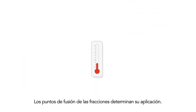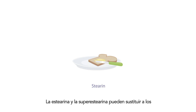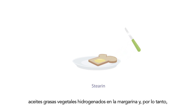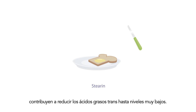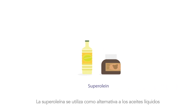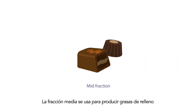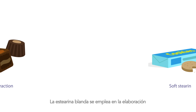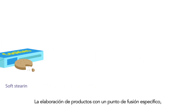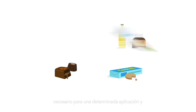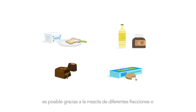The melting points of the fractions determine their application. Stearin and super stearin can substitute hydrogenated vegetable oils and fats in margarine, and thus contribute to lowering of trans fatty acids to very low levels. Superolein is used as an alternative for liquid oils and among others used in chocolate spreads. The mid-fraction is used to produce filling fats and cream fats. Soft stearin is used to make bakery shortenings. Mixing different fractions or with other oils makes it possible to produce products with a specific melting point necessary for a certain application, resulting in a wide portfolio.